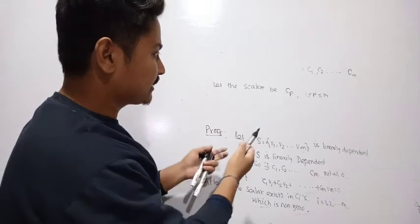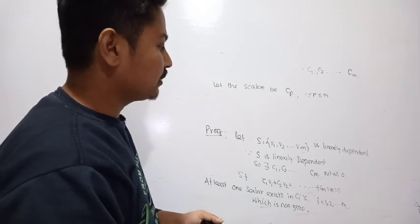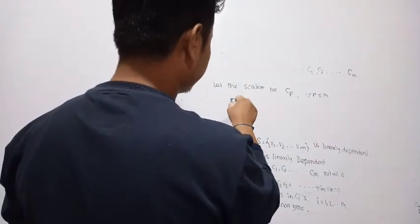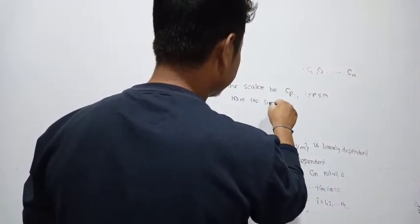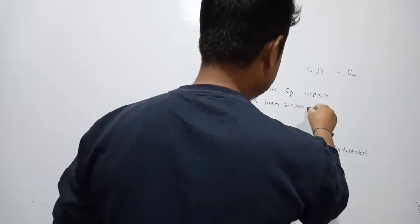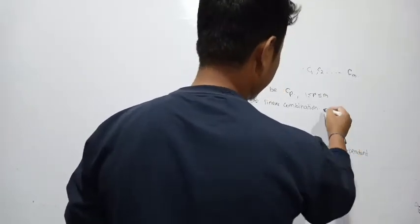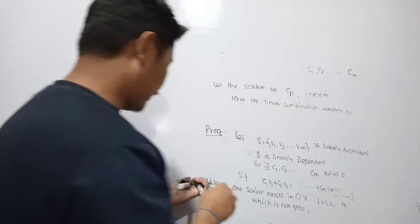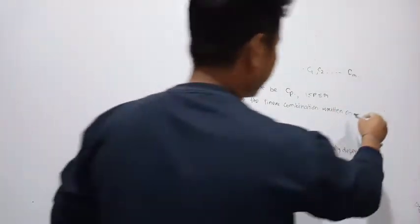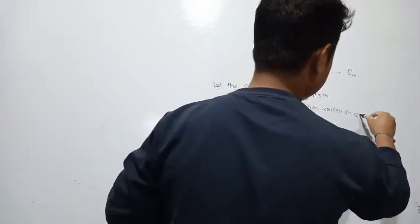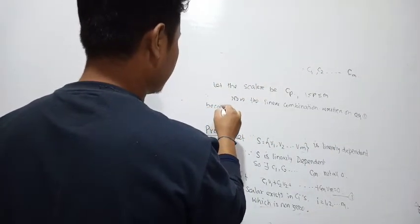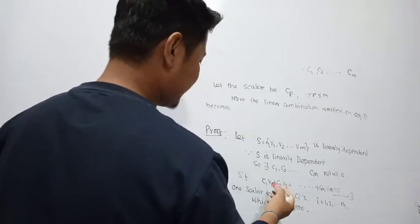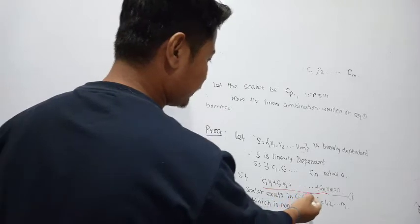We can write the linear combination as C1V1 + C2V2 + ... + CpVp + ... + CmVm = 0. Label this as equation (1). So equation (1) becomes: C1V1 + C2V2 + ... + CmVm = 0, where among the scalars C1, C2, ..., Cm at least one non-zero scalar exists for this linearly dependent set S.